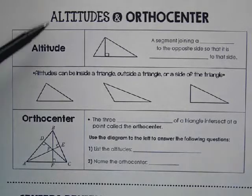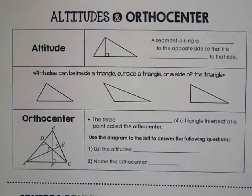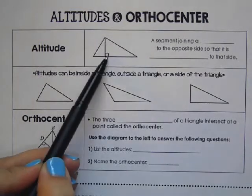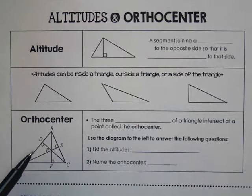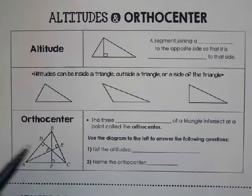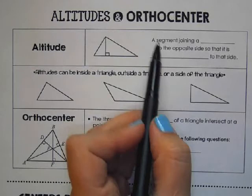The final special segment we have are altitudes, and they meet at an orthocenter. There's really not that much besides knowing that it creates a 90 degree angle that you do with altitudes until we get into the area of a triangle and also some trigonometry.